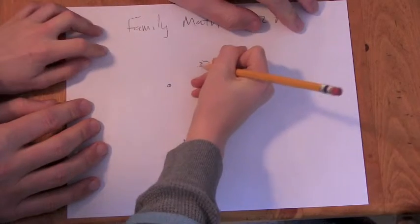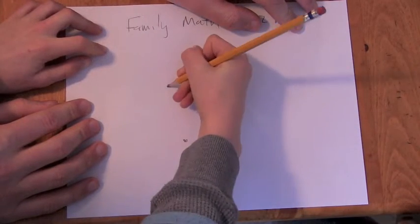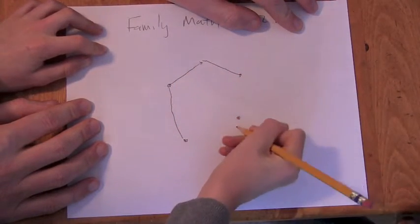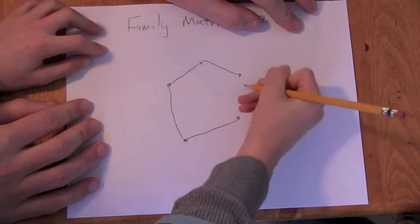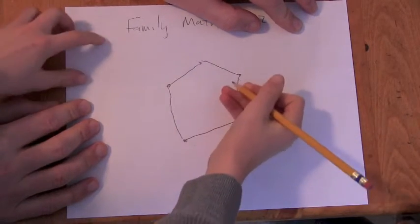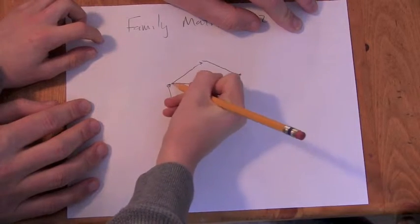With all possible lines that connect points. This would be the outside, and then you could go systematically around. Okay. You could connect like this.